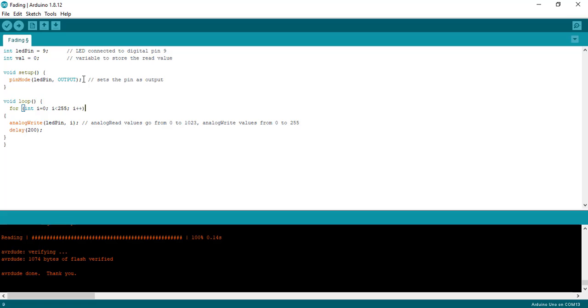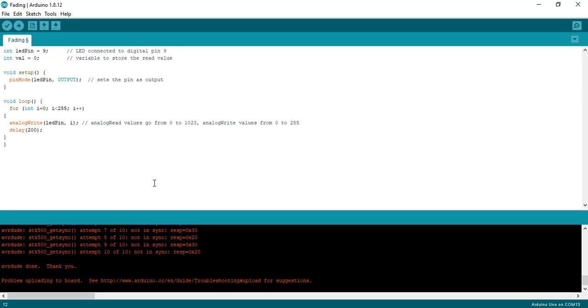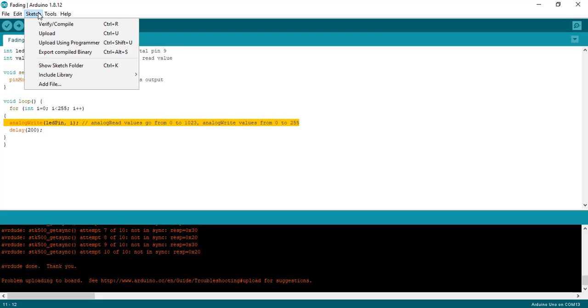This Arduino code generates a variable pulse width PWM from 0 to 100% duty cycle. The output of PWM appears on pin 9 of Arduino. Upload this code to Arduino using Arduino IDE.